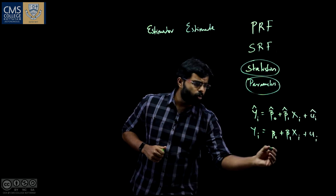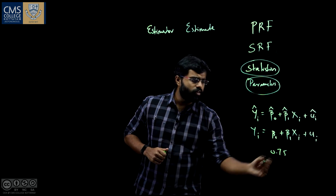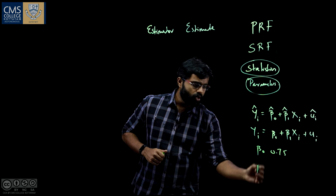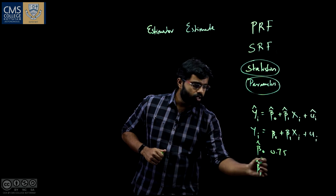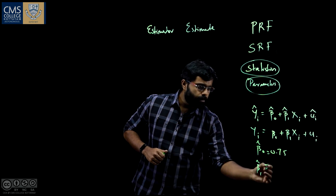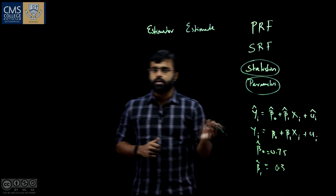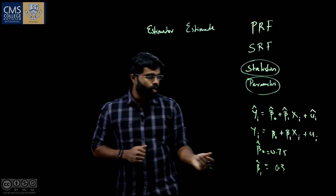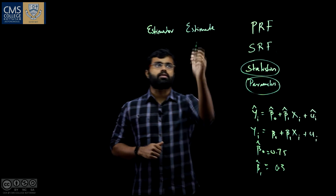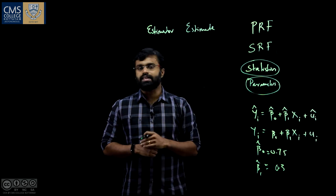Beta0 and beta1 are basically the sample characteristics. Beta0-hat and beta1-hat — the sample characteristics — are the formulas or rules or characteristics of samples that we use to infer about the population. That means estimators. An estimator is a critical value. For example, 0.75 is beta0 and beta1 is 0.3 — these numerical values are the estimates of this particular estimator.